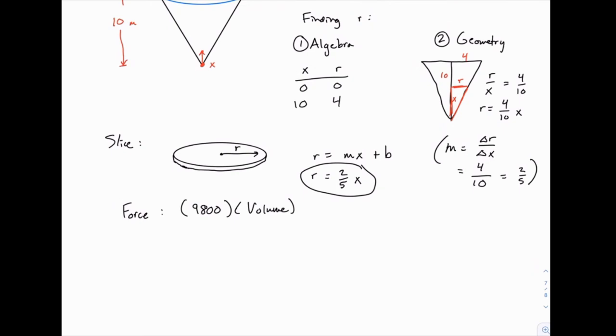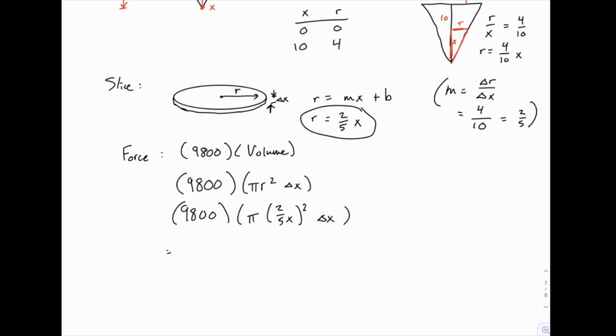We now know the radius is two-fifths times x. We know the thickness of this slice is delta x. So the volume will just be the area of that circular cross-section, pi r squared times delta x. So that's 9800 times pi times two-fifths x squared times delta x. So just to clean this up a little bit, I'll write 9800 times four over 25 times pi x squared delta x. So that's the force, that's the weight of one slice. And it looks kind of complicated, but all of this is just a constant, so the x squared is the only part we'll have to actually deal with in the integral, and that's relatively straightforward.